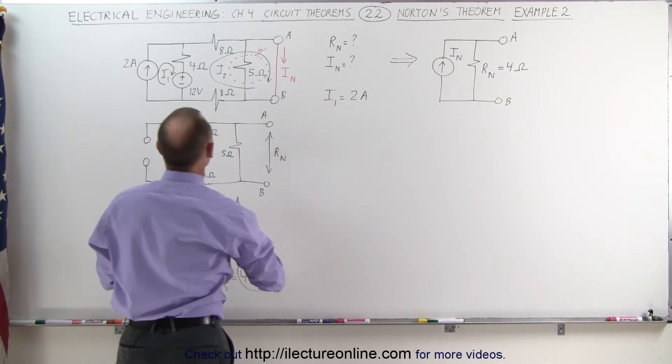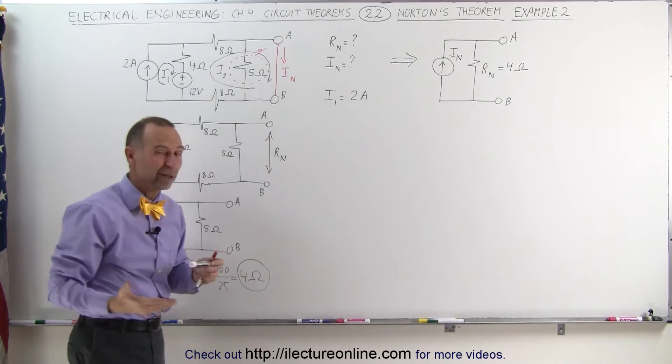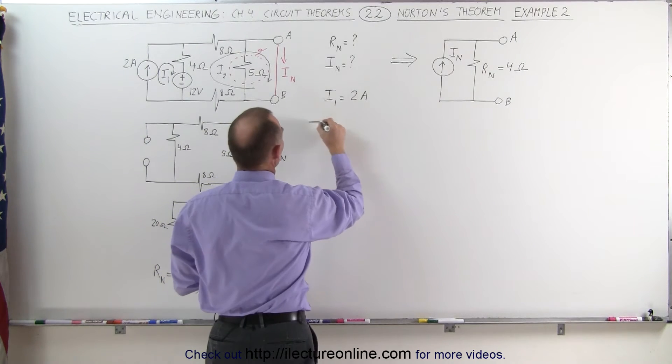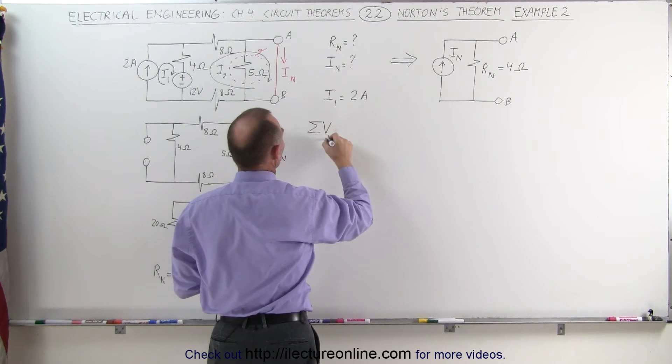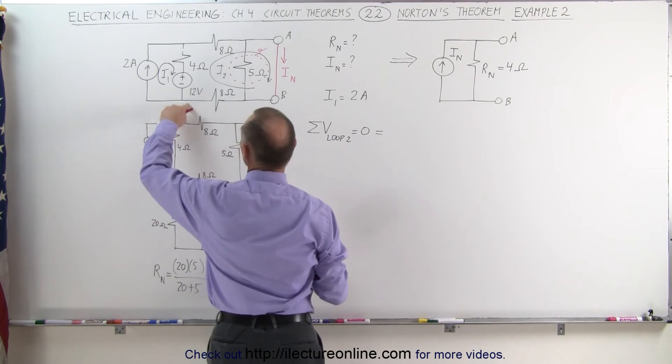And now what we can do is we can sum up all the voltages around loop 2 and set that equal to 0. Because the sum of all voltages around any loop should always add up to 0. The sum of all the voltages around loop 2 must equal 0. So let's go ahead and sum up the voltages.